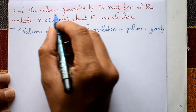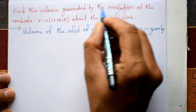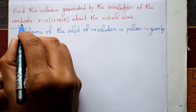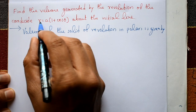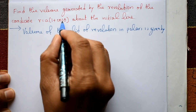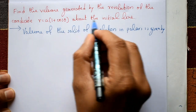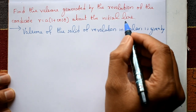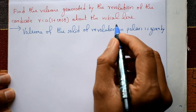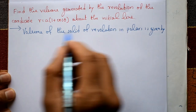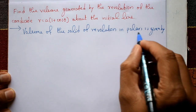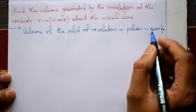Find the volume generated by the revolution of the cardioid r = a(1 + cosθ) about the initial line. It's a very simple example of volume of the solid of revolution in polar coordinates.